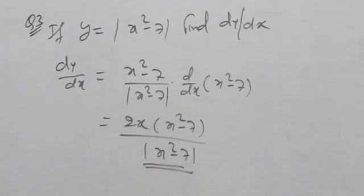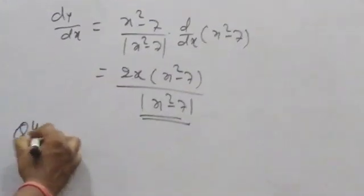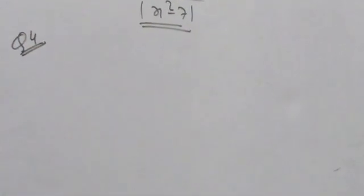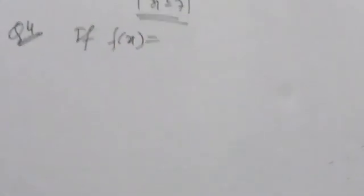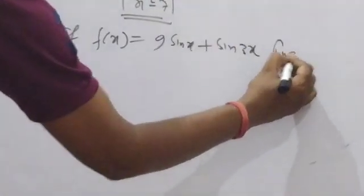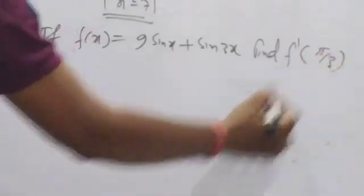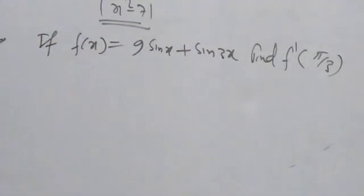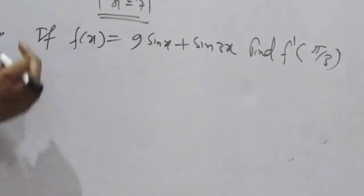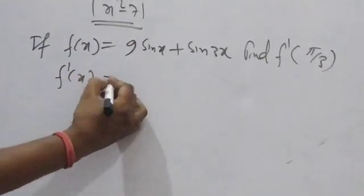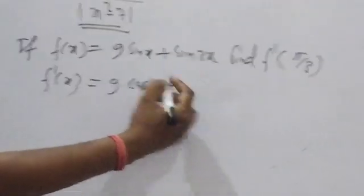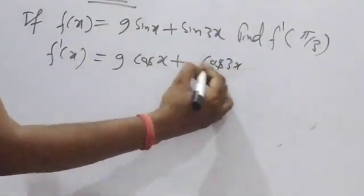Question number 4: if f(x) = 9sinx + sin3x, then find f'(π/3). f' means differentiation of f(x) with respect to x. First find the differentiation of the given function: differentiate 9sinx to get 9cosx, and differentiate sin3x to get cos3x times 3.